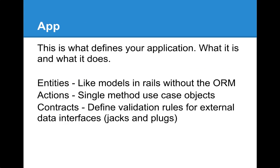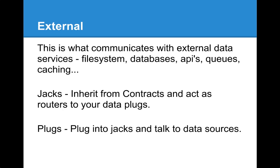The app is what defines your application. It's what makes it interesting, it's what it does. An app is defined by three things. You have entities, which are like models without the ORM attached — they're just simple objects, data structures. They have very few methods and don't necessarily do a lot. Actions are single method use case objects. Instead of having a service container with a bunch of different methods inside, you have an obviously named action with one method inside. The benefit is that when you look at the app actions directory, you can see just a list of actions. In a blog app, you might have things like list posts, get categories, get users.